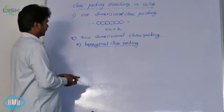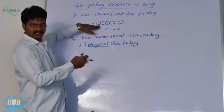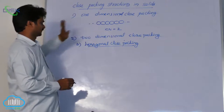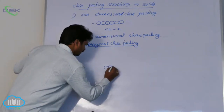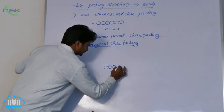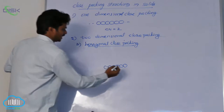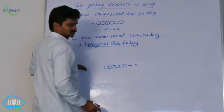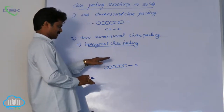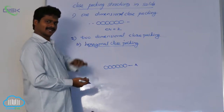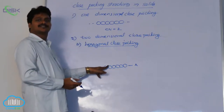Here, let us consider one dimensional rows of atoms or spheres. Let us take this is one row of spheres. Let it be row A. Now, place another row of spheres on this such that the spheres of the second row occupy the depressions of the first row.